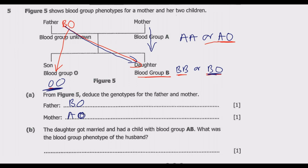The daughter got married and had a child with blood group AB. We need to find the blood group phenotype of the husband. The husband's blood group should either be A or AB for them to have a child with blood group AB. This is because the child received one A allele and one B allele. Since the mother — the daughter — has blood group B, the father must have an A allele.